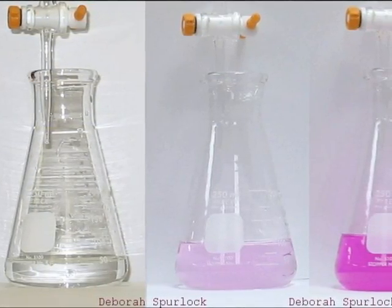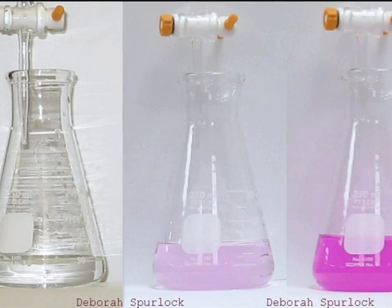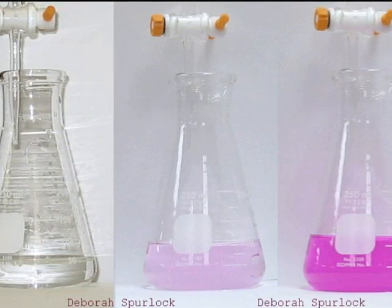In order to find the end point, an indicator is used. The indicator exhibits a color change as the pH is varied. In this case, phenolphthalein is used as the indicator.